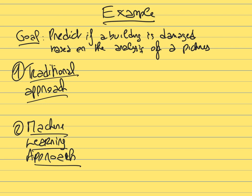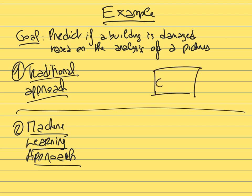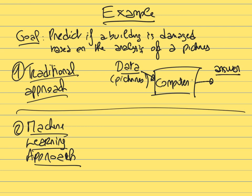In the traditional approach, you teach a computer to recognize building damage by providing data (pictures) and then providing explicit rules. The computer should give you an answer — damaged or not damaged — based on those rules.